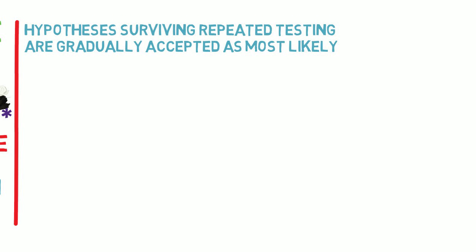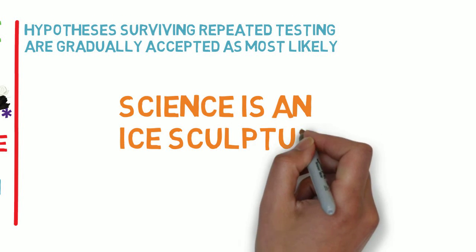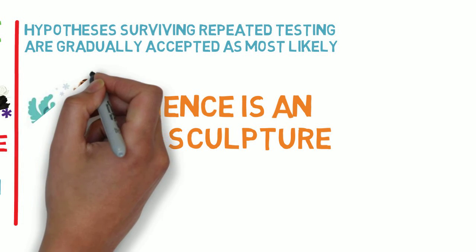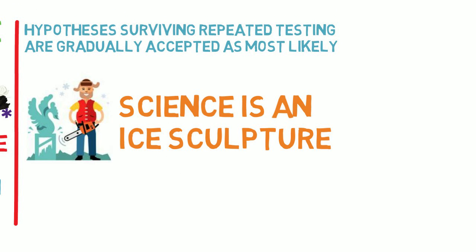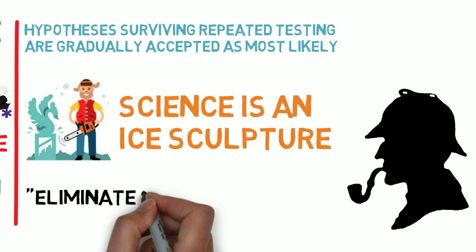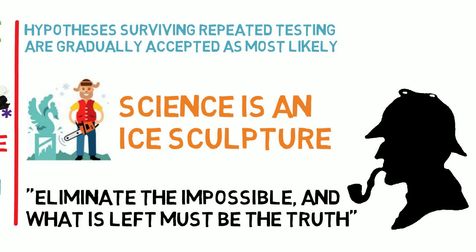This is the way science proceeds — a bit like an ice sculpture, by chipping away false hypotheses so that what is left by elimination is more likely to be the truth. Another way of thinking about this is a bit like Sherlock Holmes: eliminate the impossible, and what is left must be the truth, or at least must contain the truth.